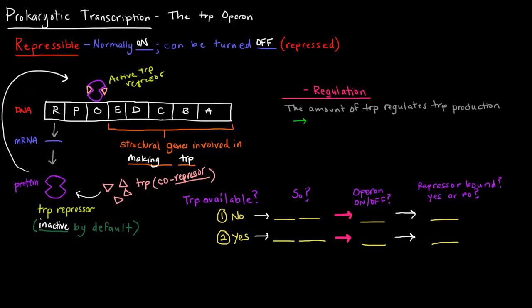So let's think about this here. So if there's no tryptophan available, what happens? That means we want to make more, or make some. So no tryptophan available, make some. So does that mean the operon will be on or off? Well, this operon is involved in making them, so it'll be on.